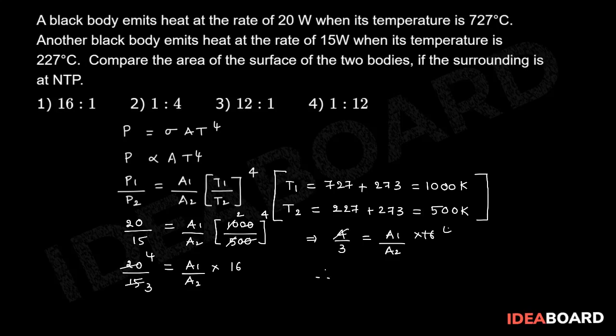So 4 ones, 4 fours. Therefore A1 by A2 which is equal to 1 by 12. A1 is to A2 is equal to 1 is to 12. So fourth option is the right option.